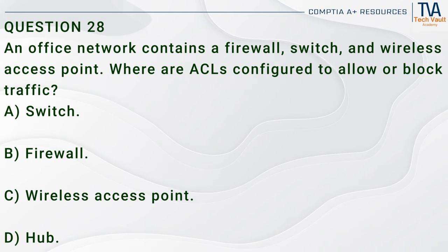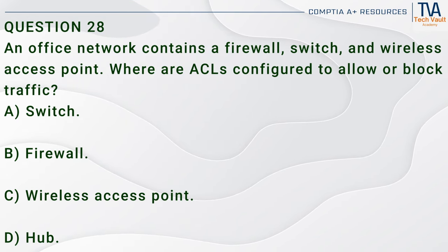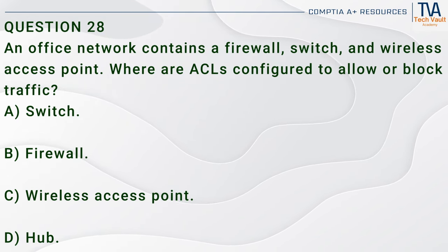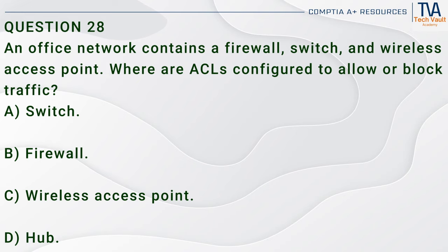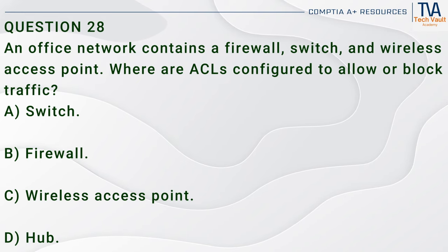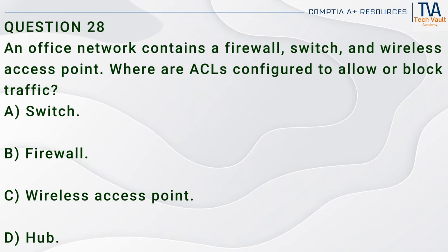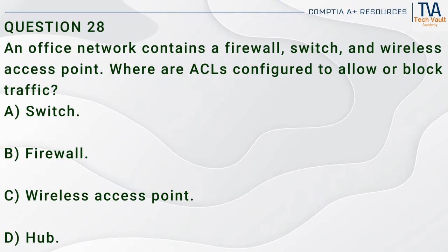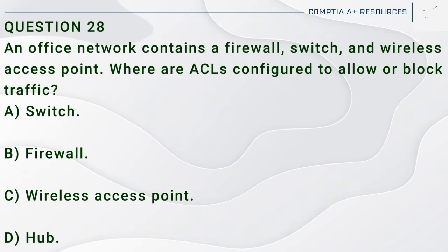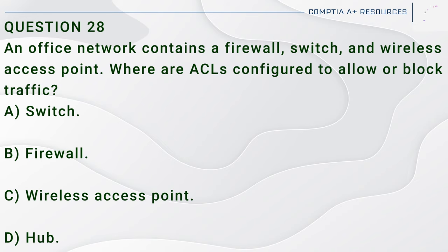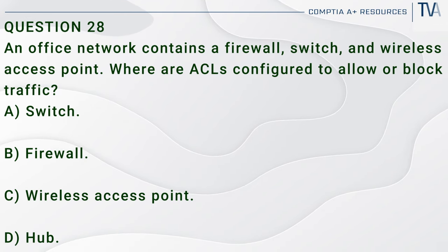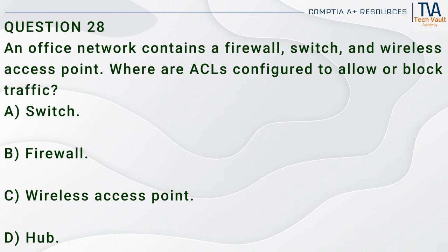Question 28. An office network contains a firewall, switch, and wireless access point. Where are ACLs configured to allow or block traffic? A. Switch. B. Firewall. C. Wireless access point. D. Hub.